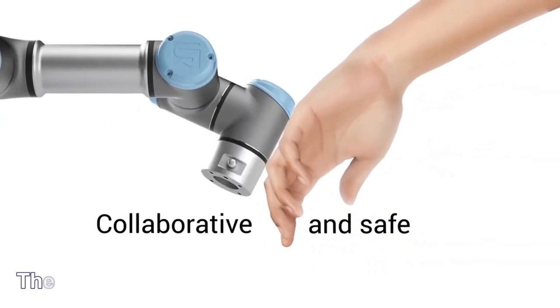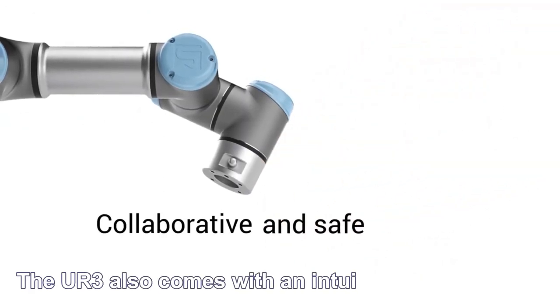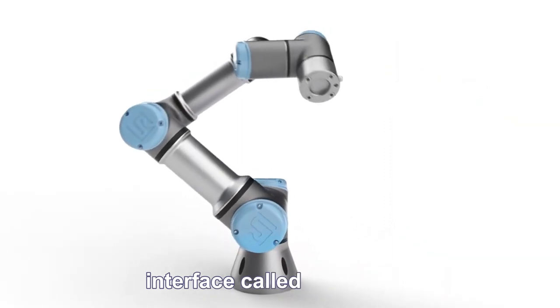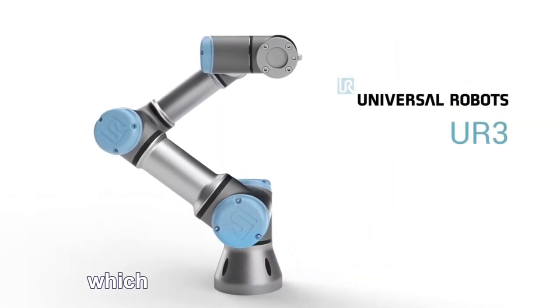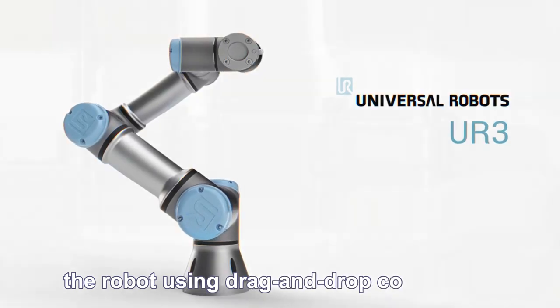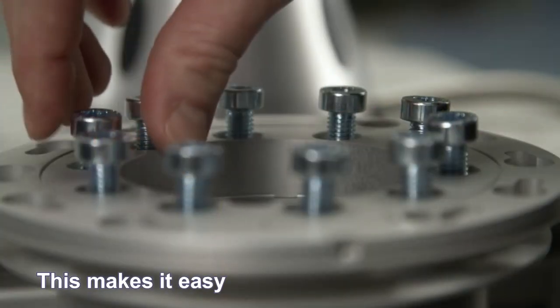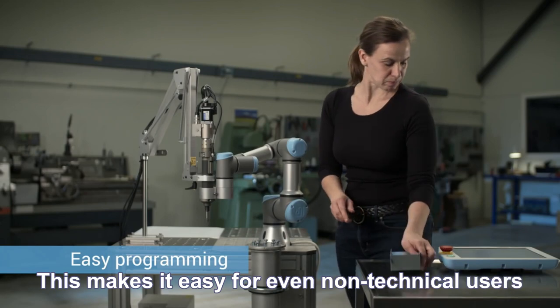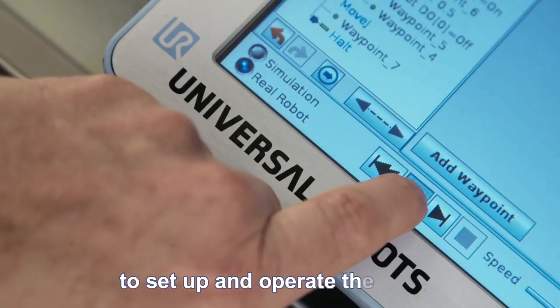The UR3 also comes with an intuitive programming interface called PolyScope which allows users to easily program the robot using drag and drop commands. This makes it easy for even non-technical users to set up and operate the robot.